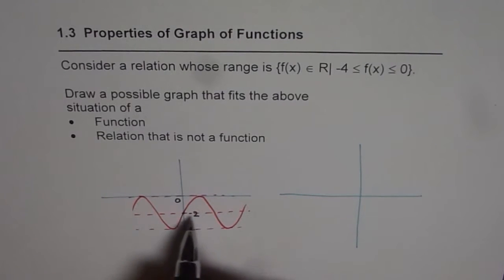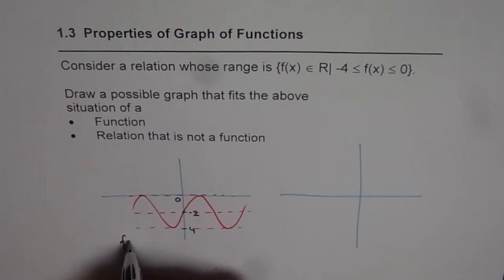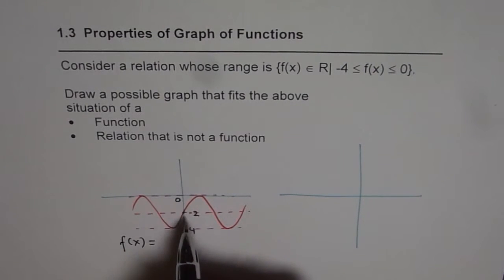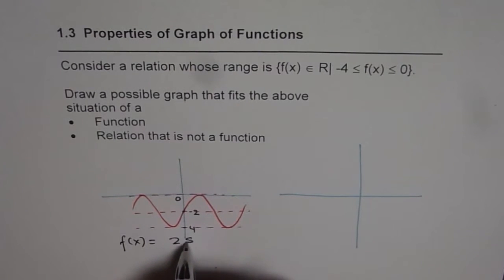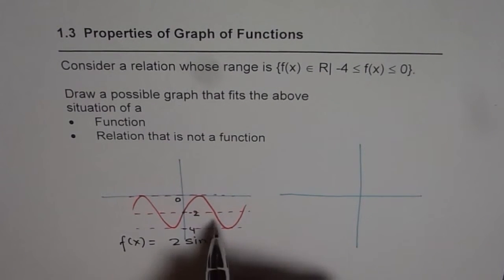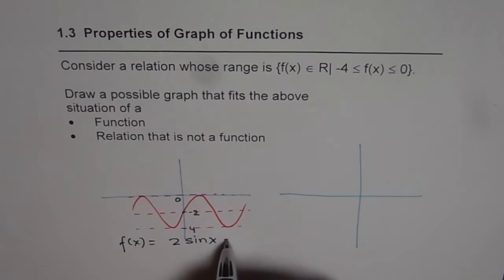We can always write down the equation of this function and let this be f(x) equals 2. Since the amplitude is 2, from the center 2 units up and 2 down, we will write this as 2 sine x and it has moved 2 units down minus 2.